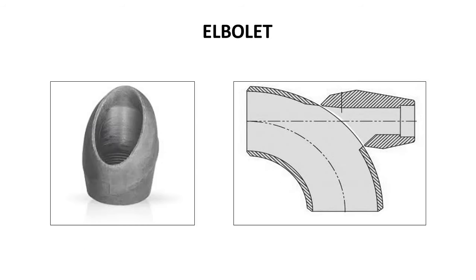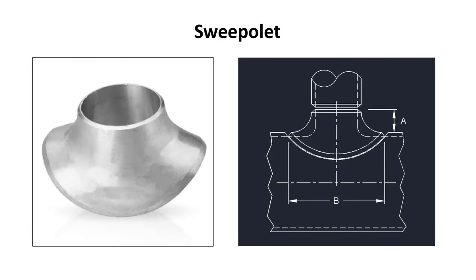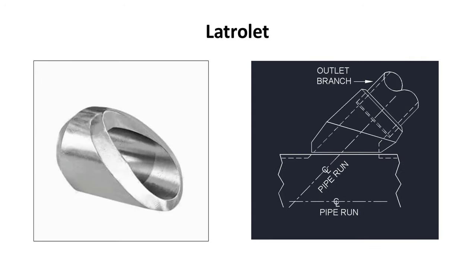Elbowlets are placed at elbows when you need to take a branch from an elbow. This is not a common practice — it is only used in specific cases such as instrument connections or injection points. Sweep olets are an extruded fitting that provides a branch connection from the pipe. Lateral olets are used for taking branches at a certain inclination, such as a 45-degree angle, as shown in the picture.